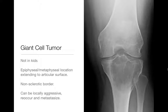Next up, giant cell tumors. These are for the most part benign tumors, though they can be very locally aggressive, can recur, and can actually metastasize — usually to the lung. Those metastases are not going to kill you, but they'll still grow there. Giant cell tumors originate at the epiphyseal-metaphyseal interface and grow to the articular surface. You can see this one: geographic lytic lesion, narrow zone of transition, non-sclerotic border in the epiphysis and metaphysis extending to the articular surface, without periosteal reaction or fractures.